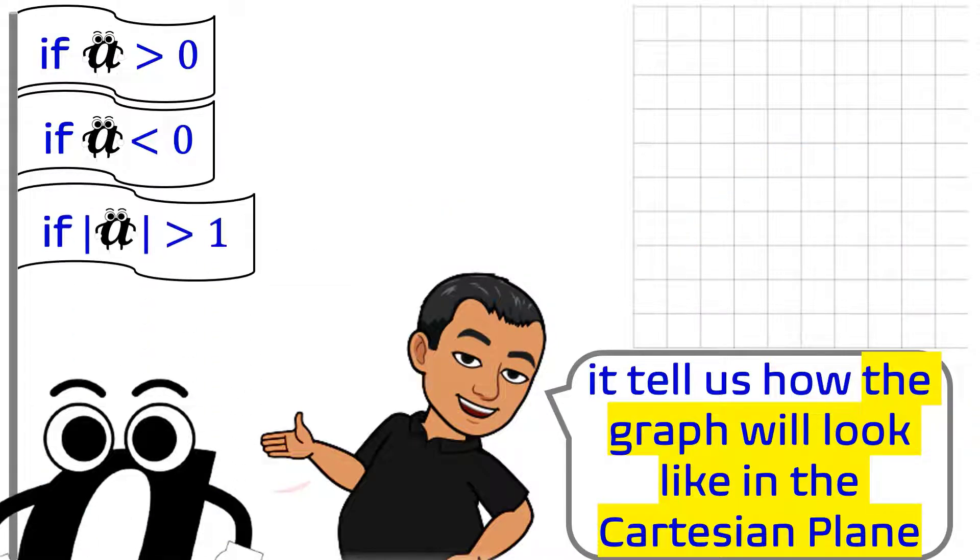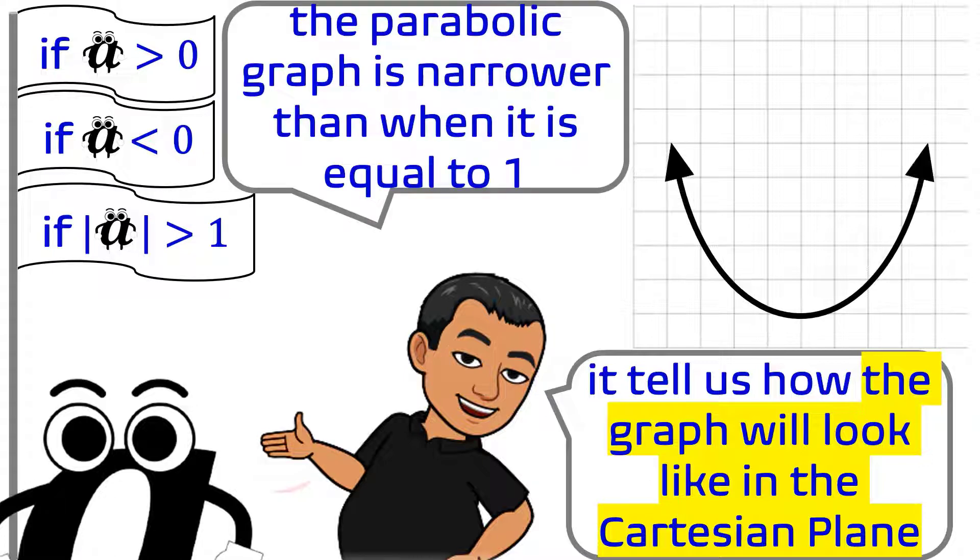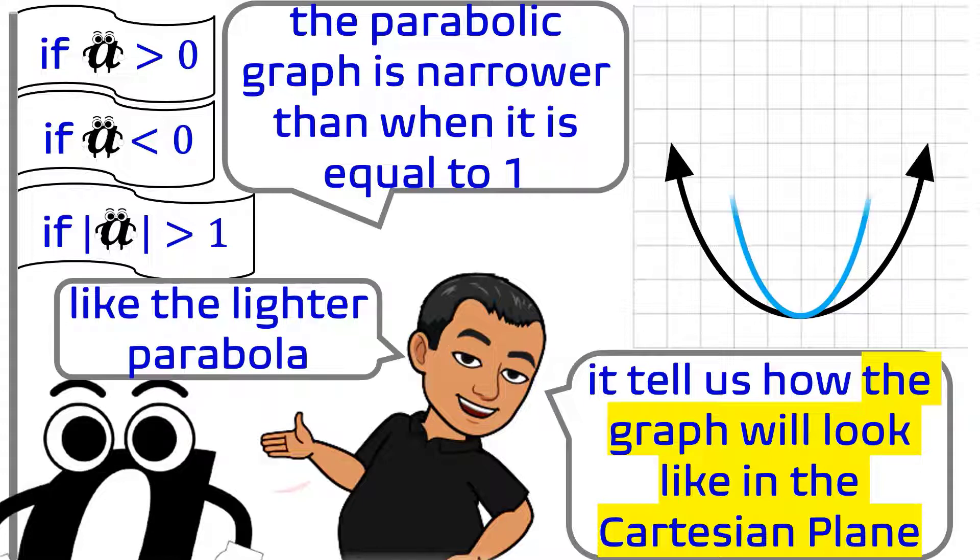If the absolute value of A is greater than 1, the parabolic graph is narrower than when it is equal to 1, like the lighter parabola here.